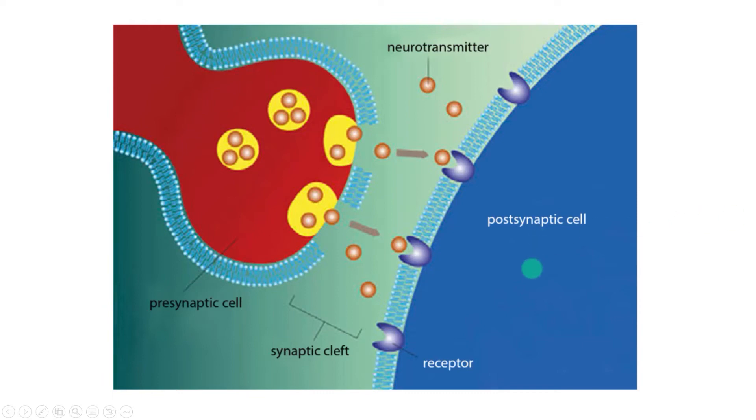And like I said before, sometimes the message for this postsynaptic cell is that it should start an action potential. So we would say that this neuron has been excited, but sometimes the message is to stop or prevent an action potential from happening.